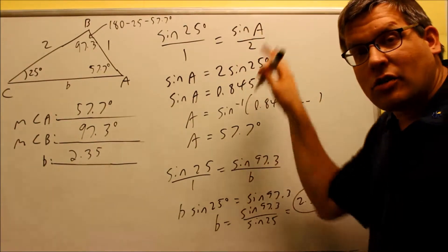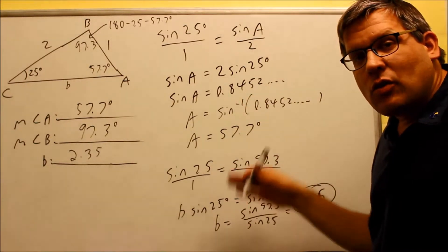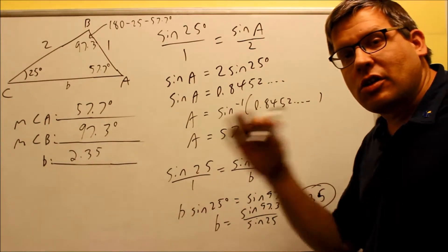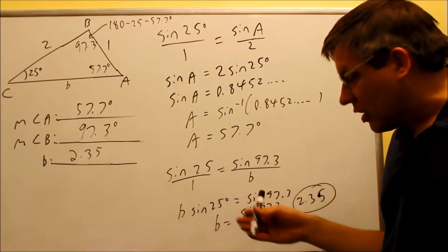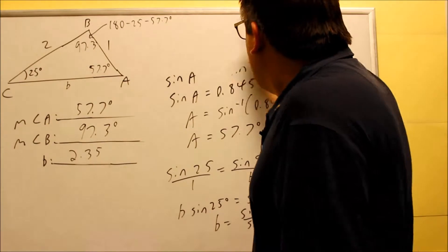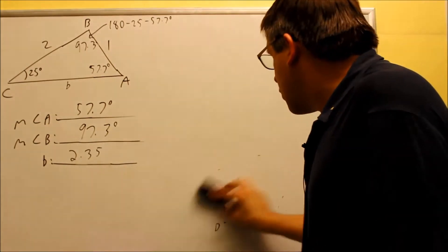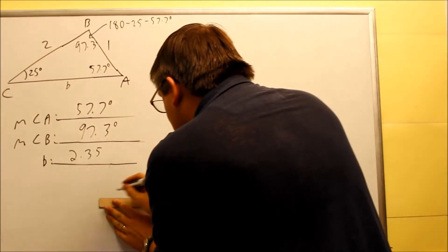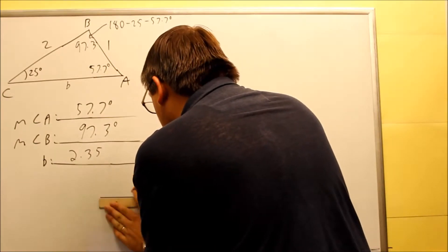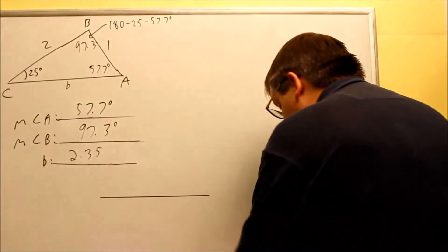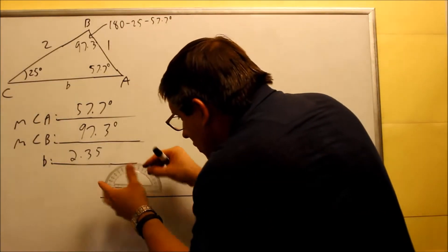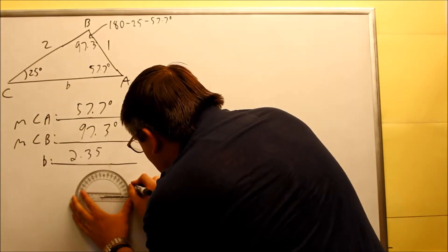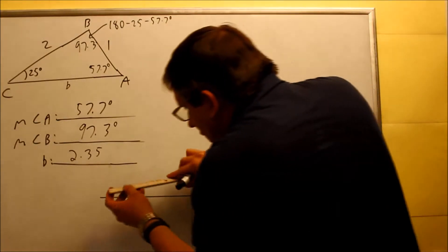I've done all the calculations using the Law of Sines. Now I'm going to draw this picture to show you physically what's happening. We already showed with 50 degrees that it's not possible to draw a triangle, but now we're going to recreate it with 25 degrees and show it is physically possible. I'm going to draw an accurate 25-degree angle starting here.